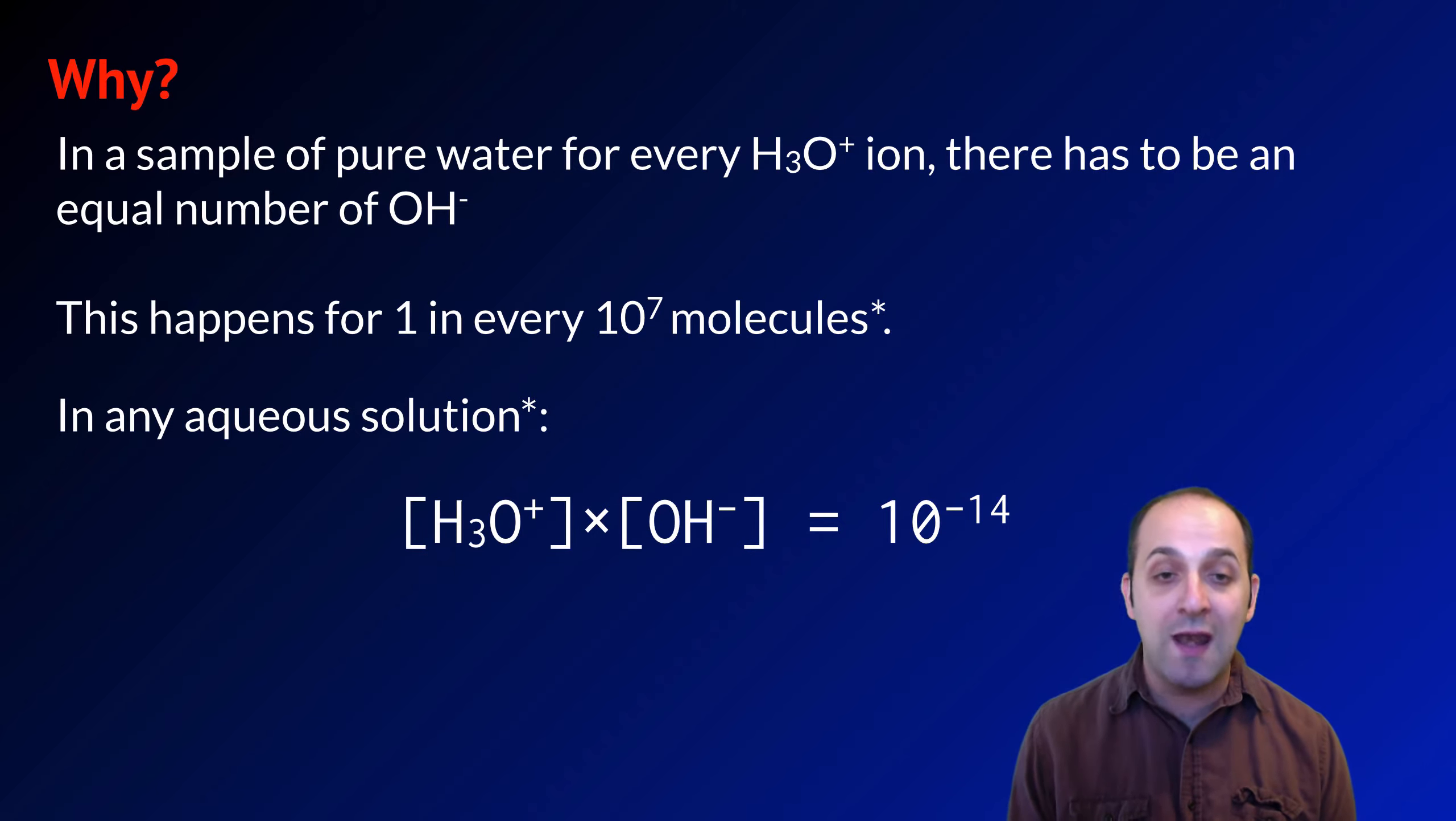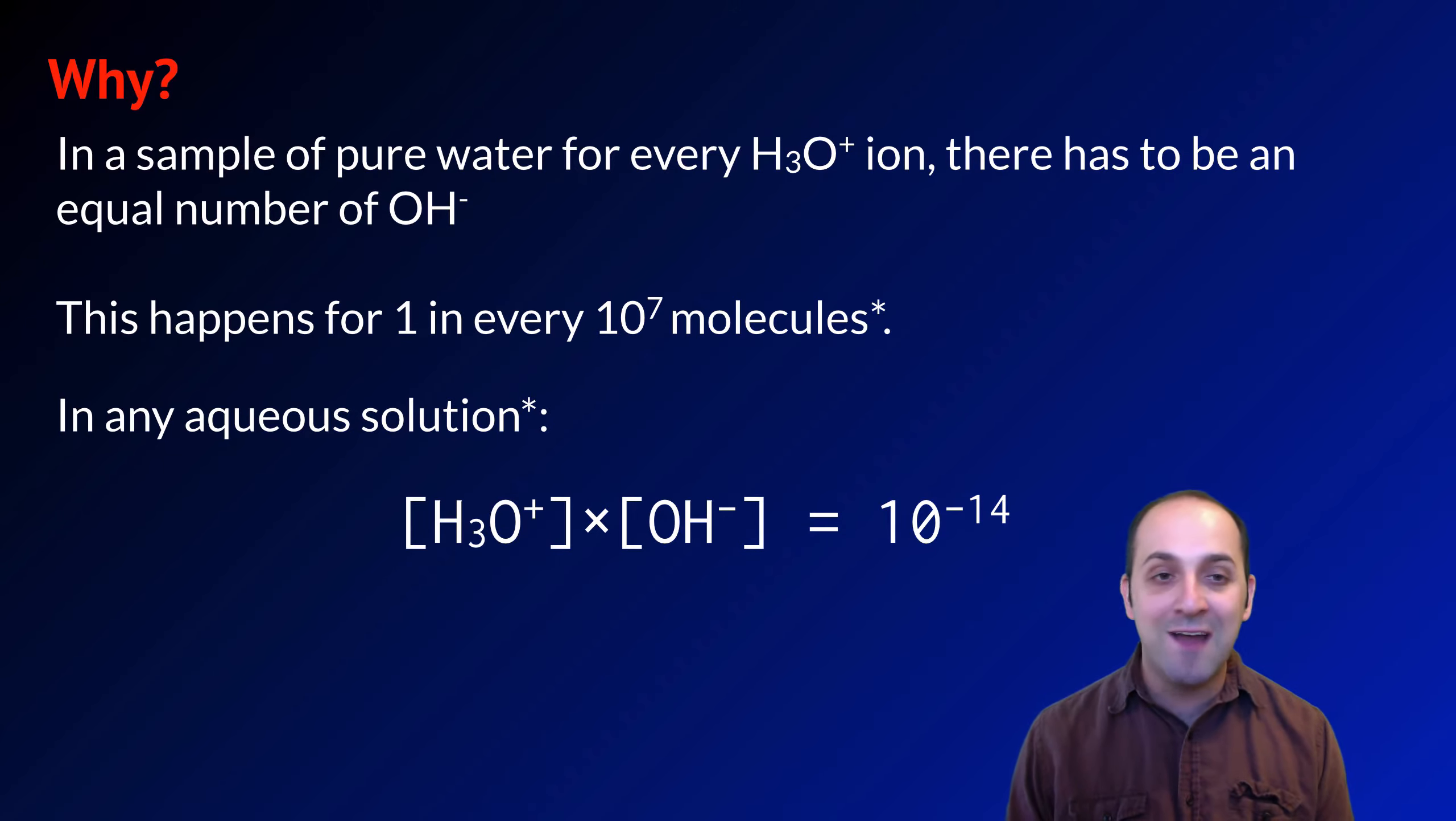If you look at 1 in every 10 to the 7, that's 10 to the negative 7 for either of these concentrations. Multiplied by each other, that's 10 to the negative 14. This value is true for any aqueous solution. It does not change. It's known as Kw, which is called the ionization constant of water.